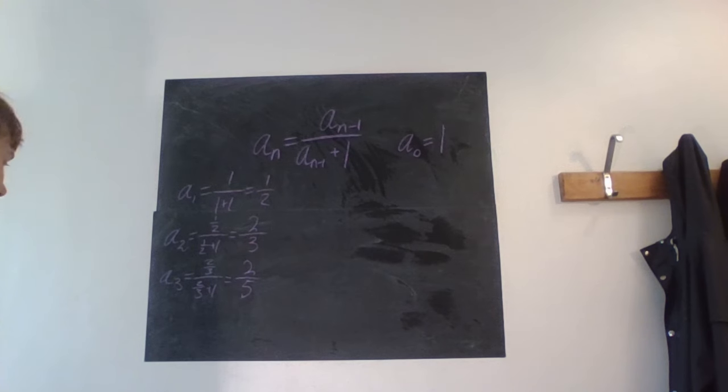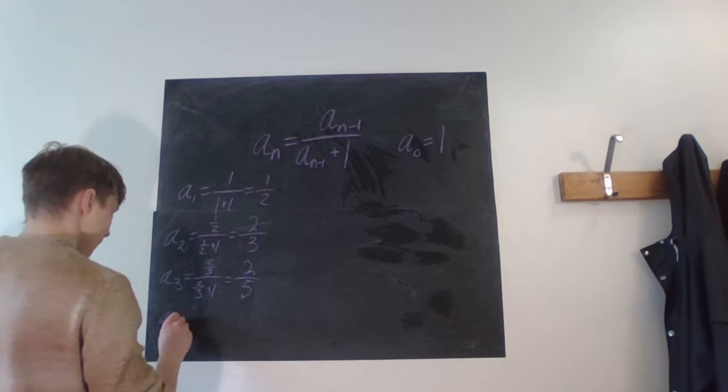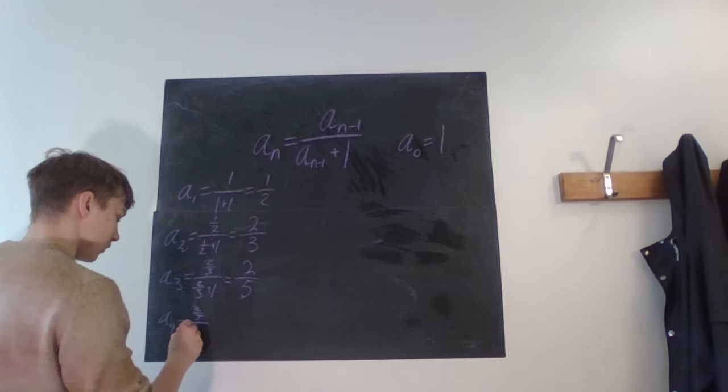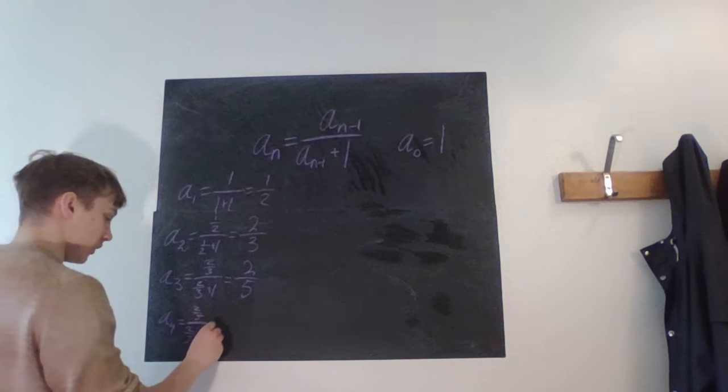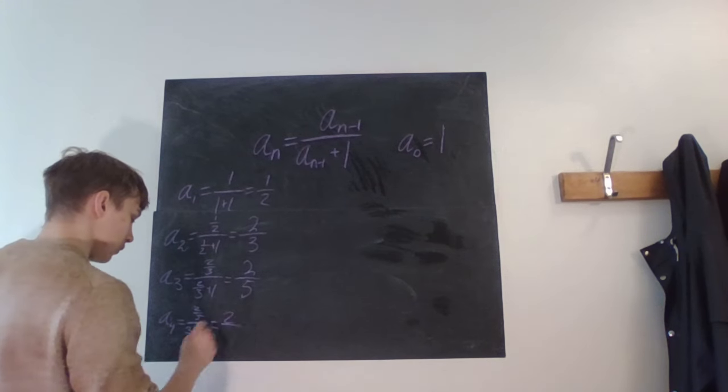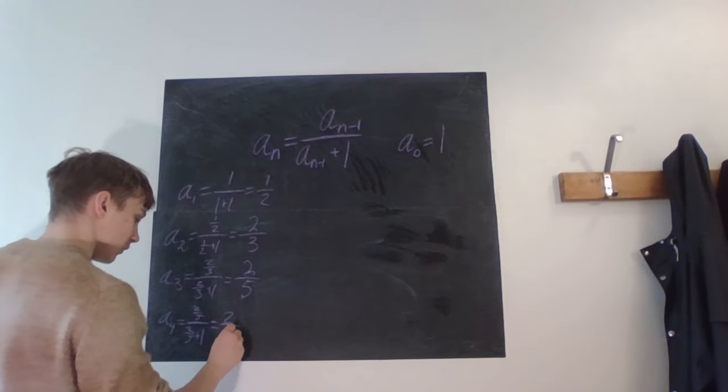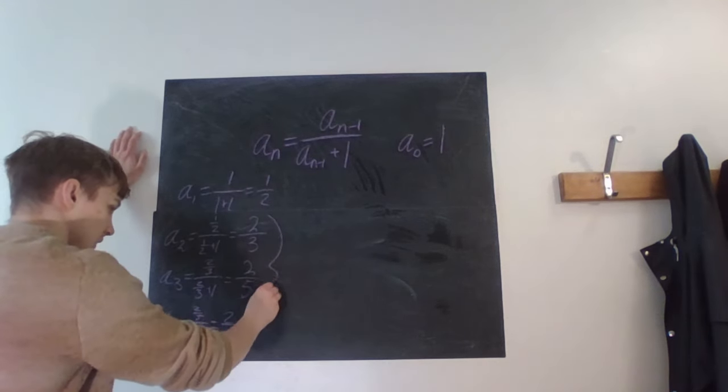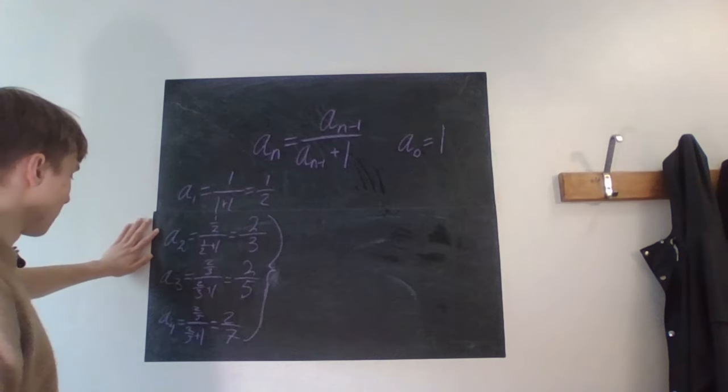So we can try another one, a_4, that's two fifths over two fifths plus one. Multiply by five everywhere, we get two over seven. So I'm not really sure about this one, but I can see a clear pattern here at least.